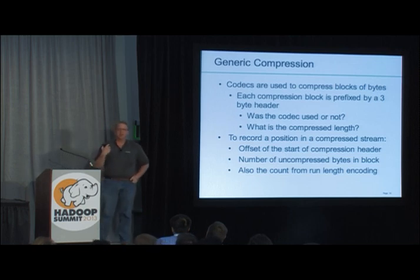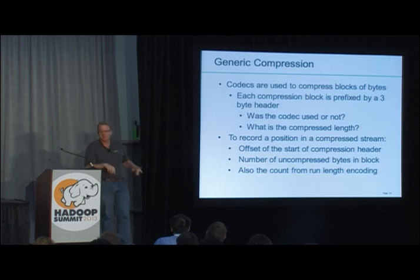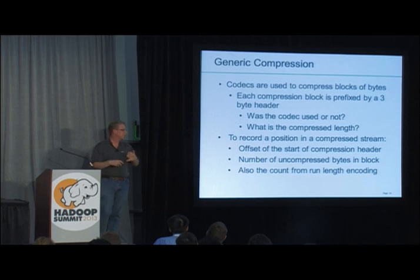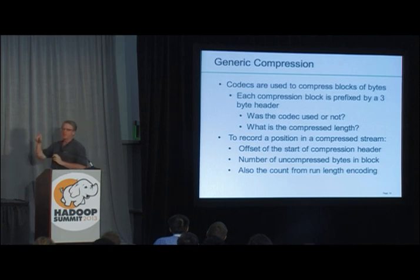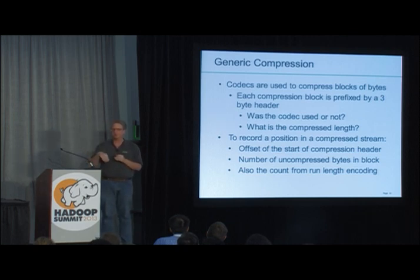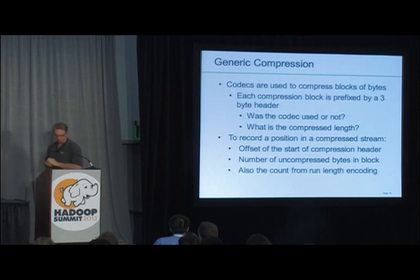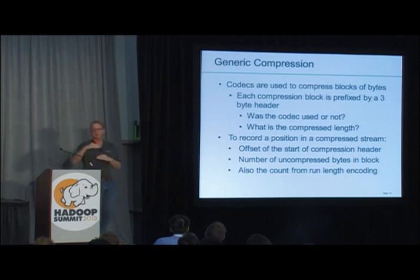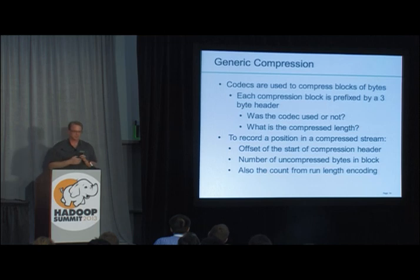For generic compression, I use standard codecs with a three-byte header that records whether the codec was used and how long the block is. If compression doesn't help, I store the data directly rather than the larger compressed version. By managing compression in blocks, I can jump into the middle of a compressed stream — something RC file couldn't do. To seek into a compressed stream, you need the offset of the compression block start and the byte offset after decompression.